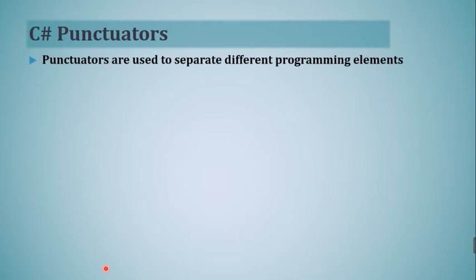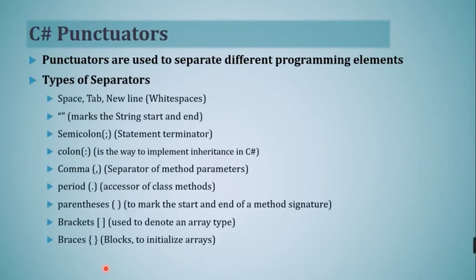Separators are also called delimiters. Punctuators are used to separate different programming elements — in our case, tokens are the different programming elements and we use punctuators to separate these words from each other. These separators are used for grouping and separating code, or denoting the boundary between programmatic constructs or other components. Fundamentally, separators define the shape of a program.